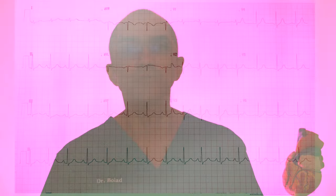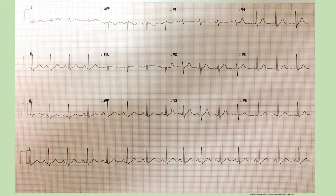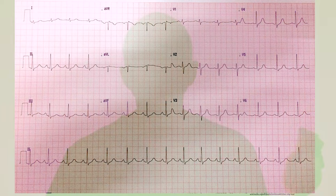The ECG grid is a plot of voltage on the vertical axis against time on the horizontal axis. The electrodes are connected to a galvanometer that records a potential difference, and the needle of the ECG is deflected a given distance depending upon the voltage measured.